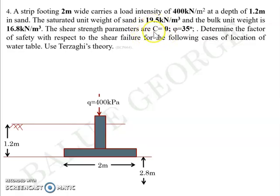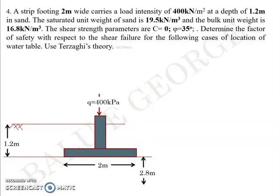C is given as zero because it is pure sand. Phi is given as 35 degrees. You are asked to determine the factor of safety with respect to shear failure using Terzaghi's equation.